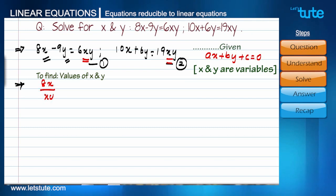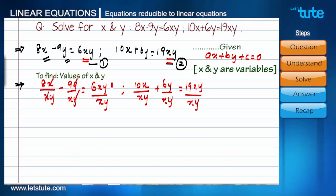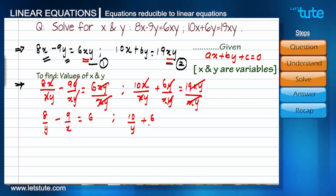So let's divide the two equations throughout by xy. It will become 8x by xy minus 9y by xy equals 6xy by xy. This was number 1, and number 2 is 10x upon xy plus 6y upon xy equals 19xy upon xy. We can see that x and x cancel, y and y cancel. Here, both xys are cancelled. Similarly, x and x cancel, y and y cancel, xy and xy cancel. So this equation becomes 8 upon y minus 9 upon x equals 6. The second equation becomes 10 upon y plus 6 upon x equals 19.